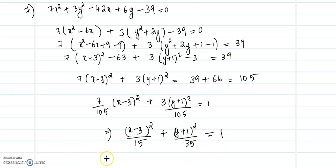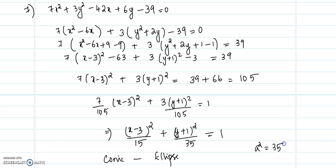This is the equation of the conic. The conic will be an ellipse. Here a squared equals 35 and b squared equals 15. It will be a conic where the major axis is about the y-axis.